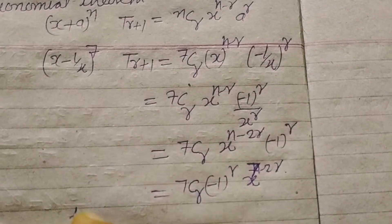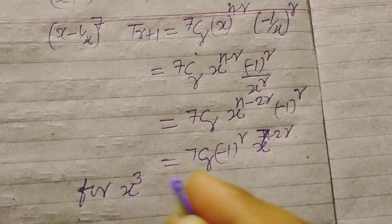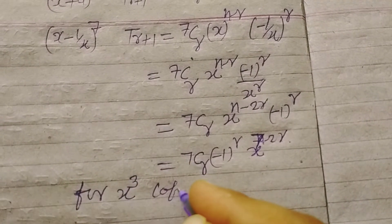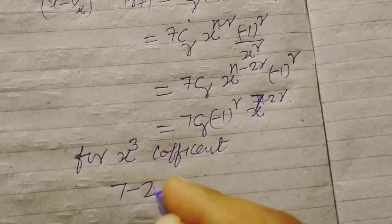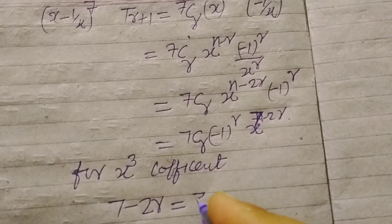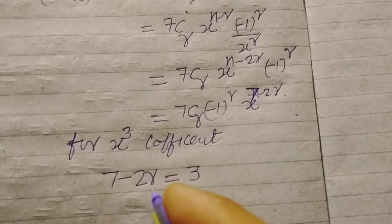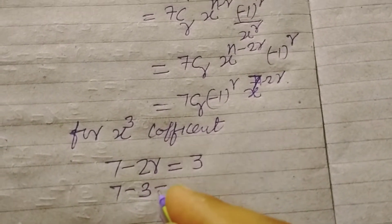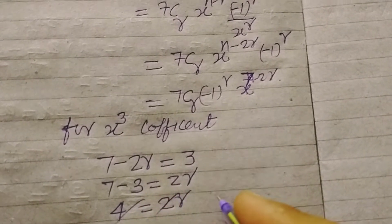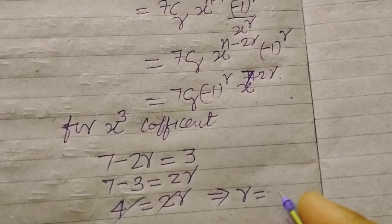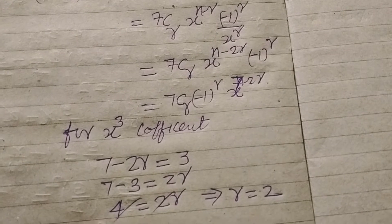Therefore, for x to the power 3 coefficient, 7 minus 2r equal to 3, or 7 minus 3 equal to 2r. Now this is 4 equal to 2r, so r equal to 2.